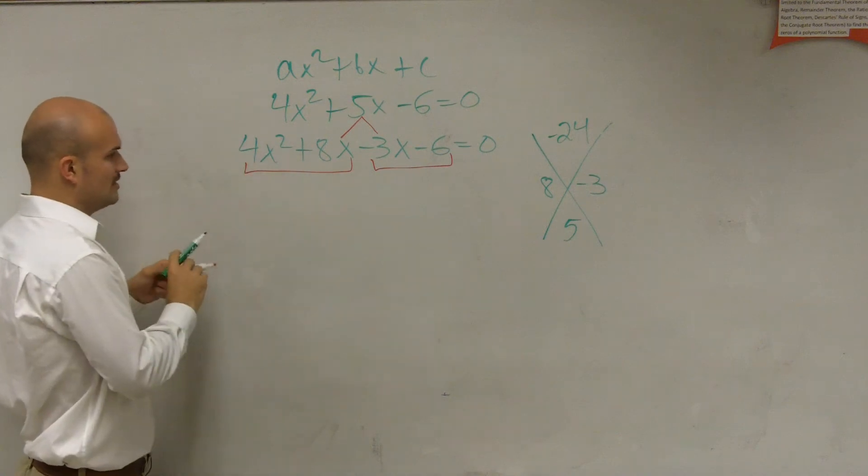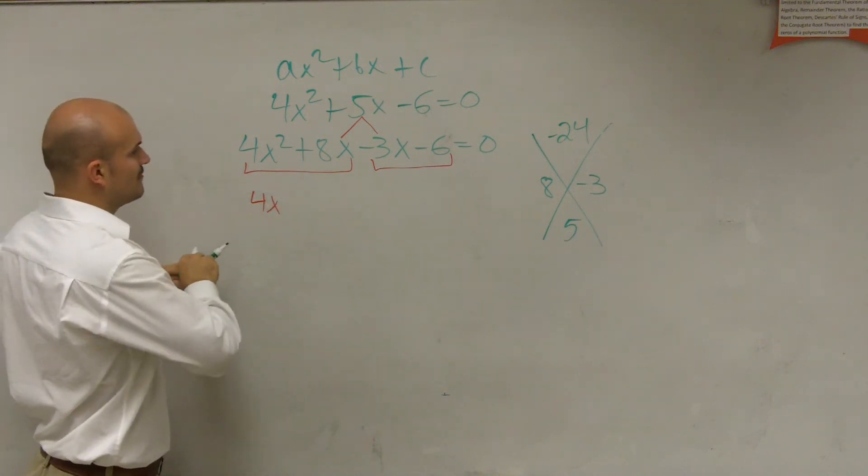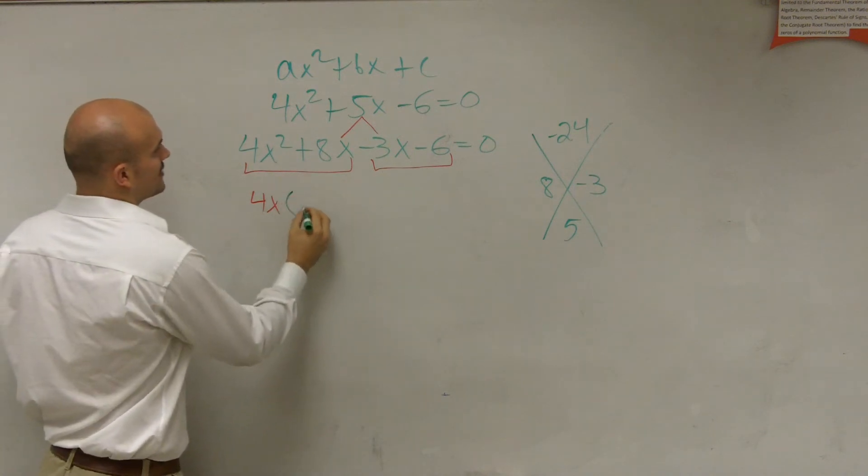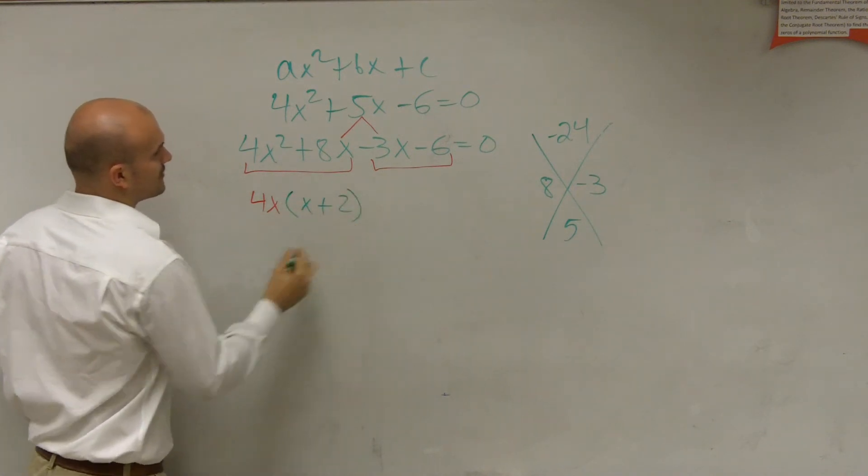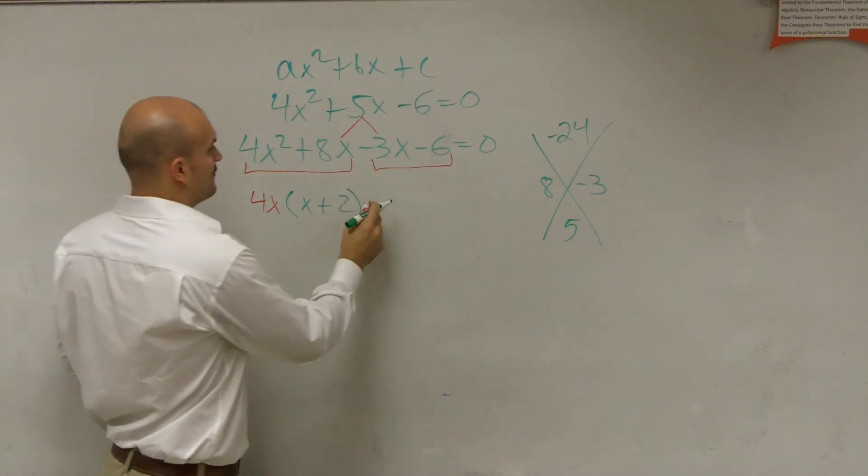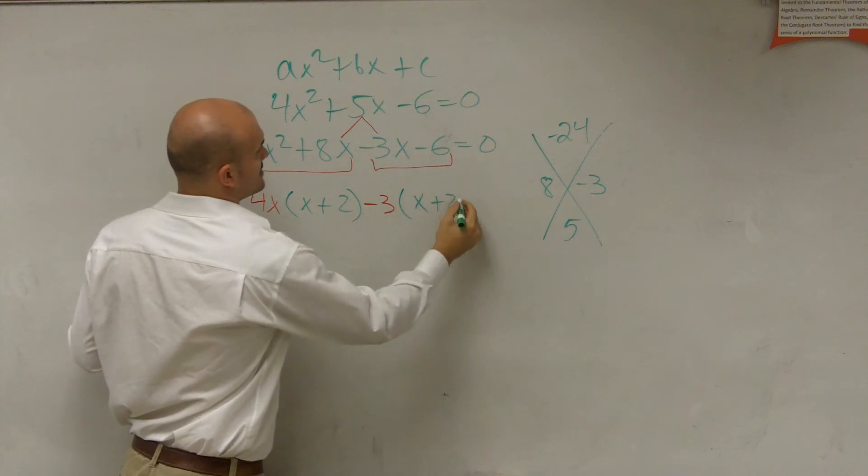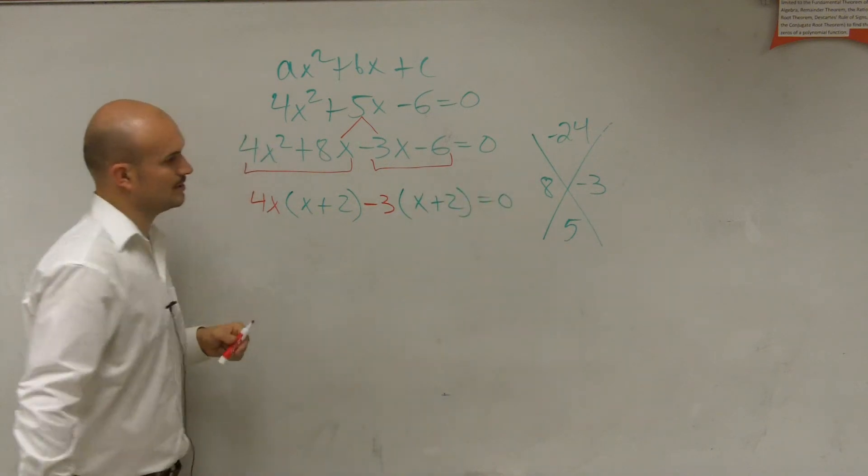So I factor the first two groups. What do these have in common? They have a 4x in common. When I factor out a 4x, I'm left with an x plus 2. Here, I can factor out a negative 3. When I factor out a negative 3, I'm left with an x plus 2 equals 0.